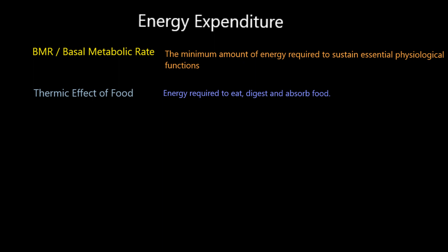That's because your body's using energy to digest and absorb the food. When these two combine, your energy expenditure is a combination of your basal metabolic rate — the amount of energy you need to keep your essential functions working — combined with the thermic effect of food, the amount of energy required to eat, digest and absorb food.